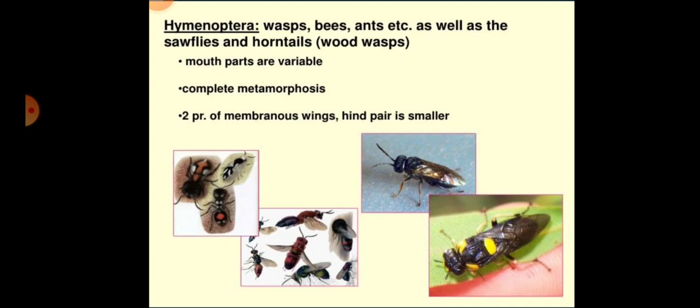Mouthparts are biting and chewing type in Symphyta, and lapping and sucking in bees. Mandibles are well developed but do not serve a trophic function; they are modified for molding wax, cutting leaves, or tearing plant fibers. In Apocryta they are adentate — spine-like without teeth — and carry out nest building.